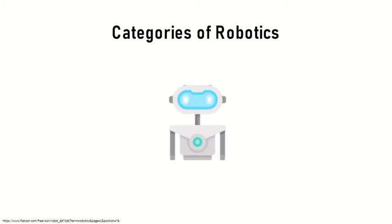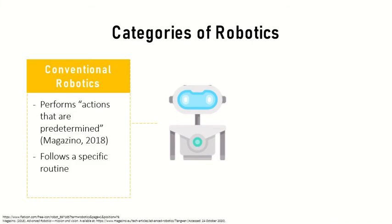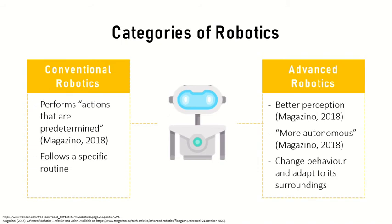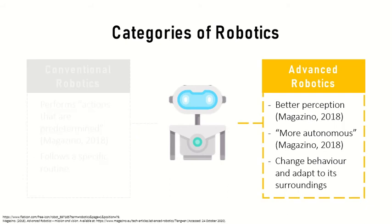Robots can be classified into two main categories. The first is conventional robotics, where robots perform actions that are predetermined and follow a specific routine. The next category is advanced robotics, where robots have better perception, are more autonomous, and can change their behavior and adapt to their surroundings. For this video, we will be focusing on advanced robotics.